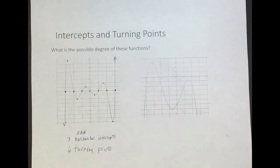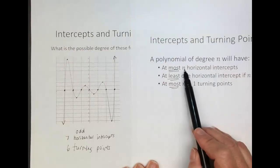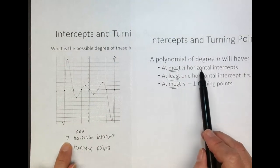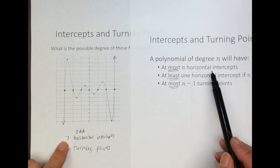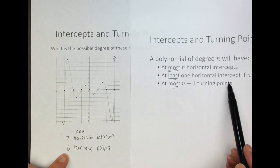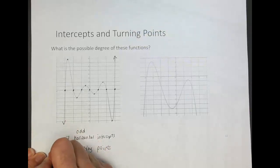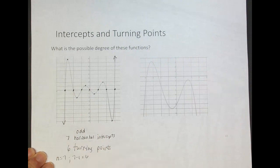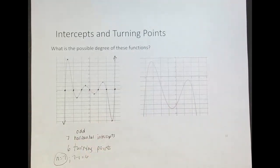So what are the characteristics? The end behavior tells us it's odd. There are at most n horizontal intercepts — we have seven, so the degree is at least seven. And there are at most n minus 1 turning points — we have six, so n minus 1 equals 6, meaning n equals 7. A good guess is that the degree of this polynomial is seven. It could be higher — seven is the smallest possible degree.